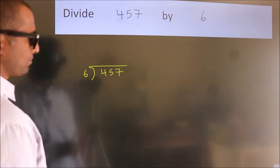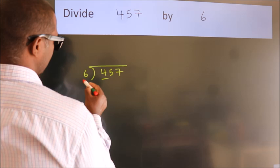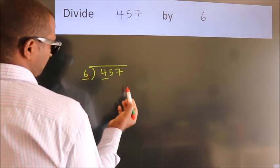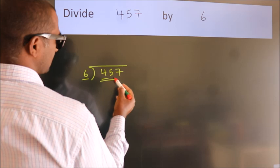Next, here we have 4. Here 6. 4 is smaller than 6. So, we should take two numbers: 45.